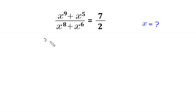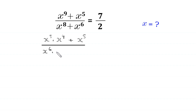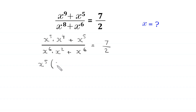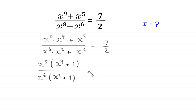x to the power 9 can be written as x to the power 5 times x to the power 4, plus x to the power 5, divided by x to the power 8 written as x to the power 6 times x squared, plus x to the power 6. From the numerator we factor out x to the power 5, leaving x to the power 4 plus 1 in brackets. From the denominator we factor out x to the power 6, leaving x squared plus 1.